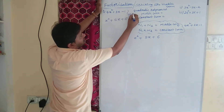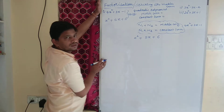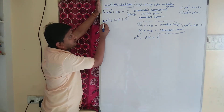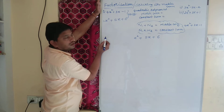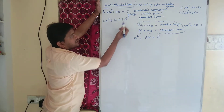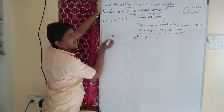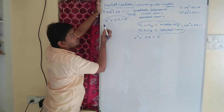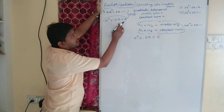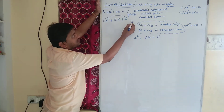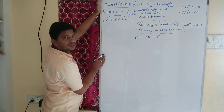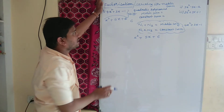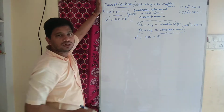What is the difference here? In this polynomial, the coefficient of x square is 1 and the constant term is 6. So actually we have to multiply the constant term with the coefficient of x square — that is 6 into 1, which is 6. If it is 1, we will not do this step; we directly take the constant term only.